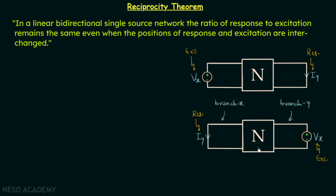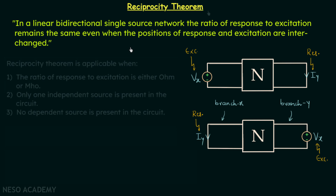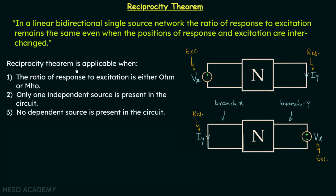Now we will move on to the conditions in which reciprocity theorem is applicable. Condition number one: the ratio of response to excitation is either ohm or mho. In this case, the ratio of response to excitation is I_y over V_x, which is mho. Condition number two: only one independent source is present in the circuit.